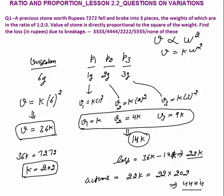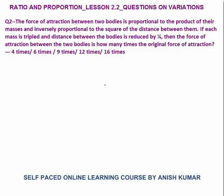Option number 2, Rs.4444, is the final answer. This question, if it comes in an exam, can be solved in under a minute entirely verbally: unbroken stone value = 36k, broken pieces total = k + 4k + 9k = 14k, loss = 22k = 22 × 202 = 4444. Question 2 says: the force of attraction between two bodies is proportional to the product of their masses and inversely proportional to the square of the distance between them. If each mass is tripled and the distance is reduced by one-fourth, find the new force as a multiple of the original.